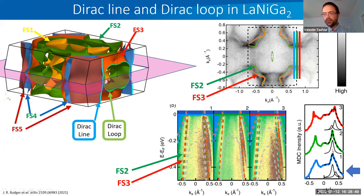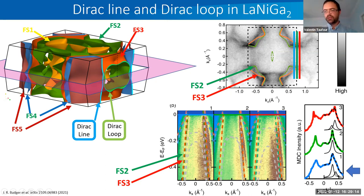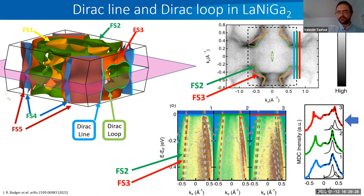Indeed, the dispersion becomes much sharper exactly on the zone boundary compared to the other two cuts. Looking at the integrated intensity at the Fermi level along each cut: for the blue line inside the zone we can resolve two peaks; exactly on the Brillouin zone boundary we see only one sharp peak; and moving into the second Brillouin zone the two peaks reappear. This confirms the band crossing on the Brillouin zone boundary.